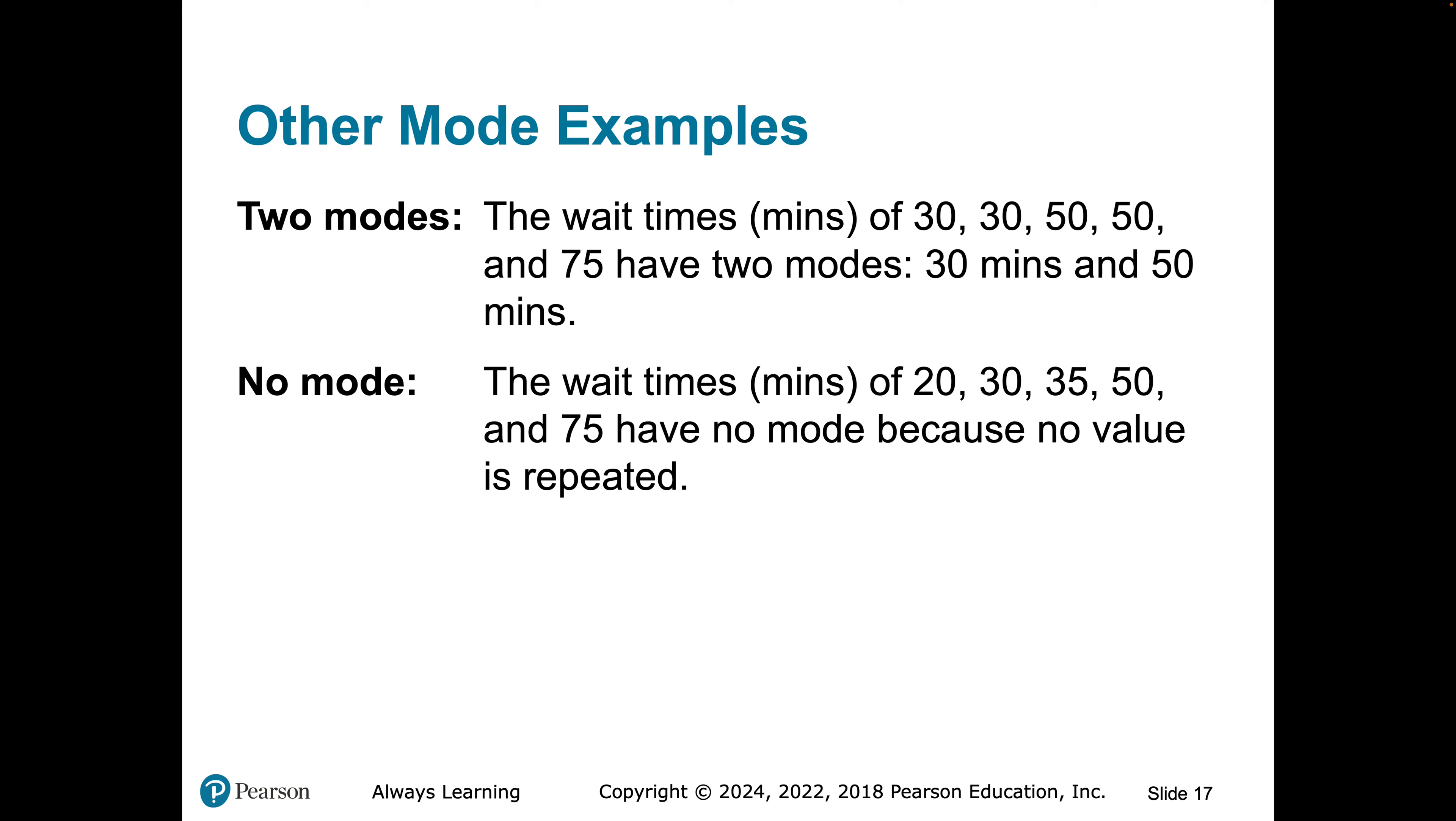Another example, if we have wait times of 30, 30, 50, and 50, we have two modes and oftentimes we don't have any or we have no values that are repeated. So, we would say that we have no mode. All right, gang. That's all I got. Take care.